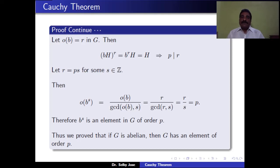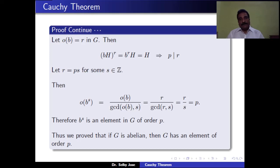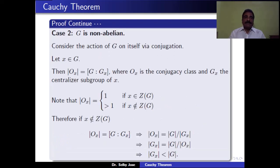Thus we have proved that when G is an abelian group and P is a prime which divides the order of the group, then G has an element of order P. Now let us consider the other case, when G is non-abelian.